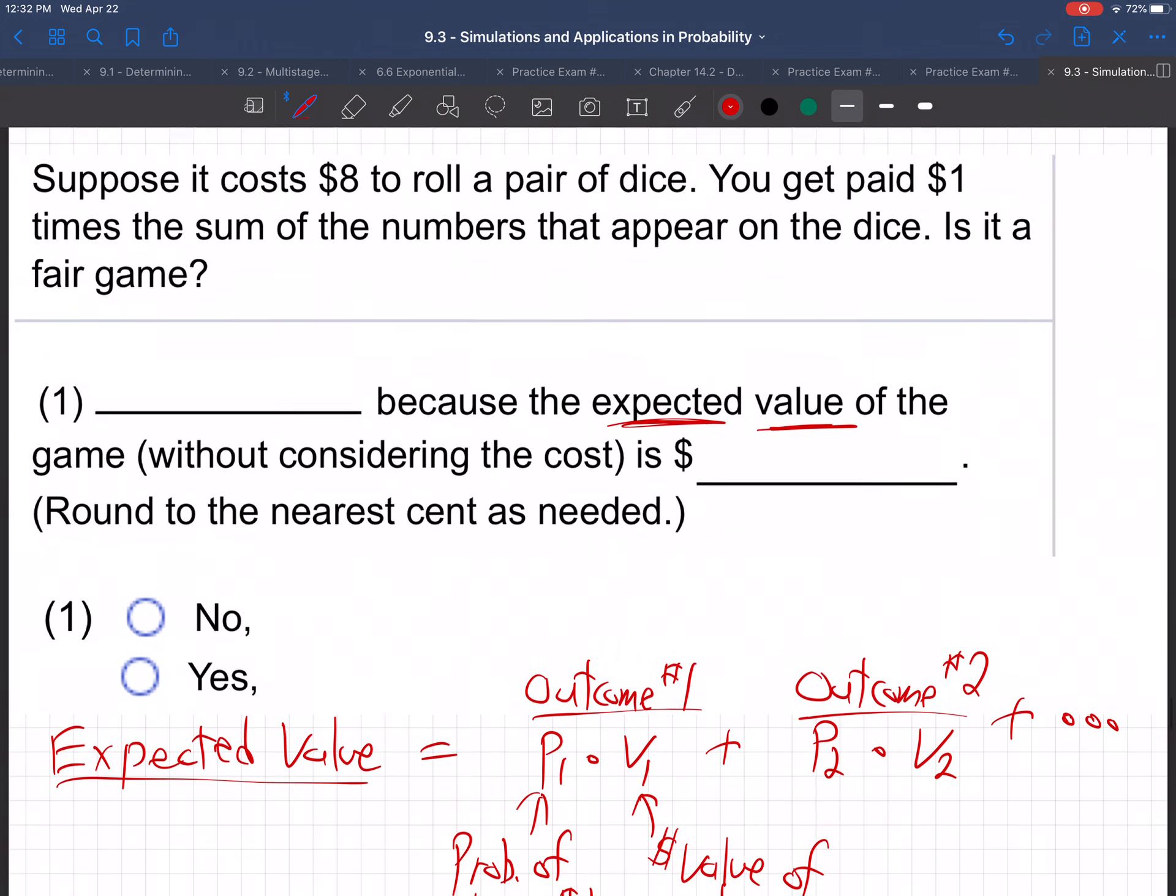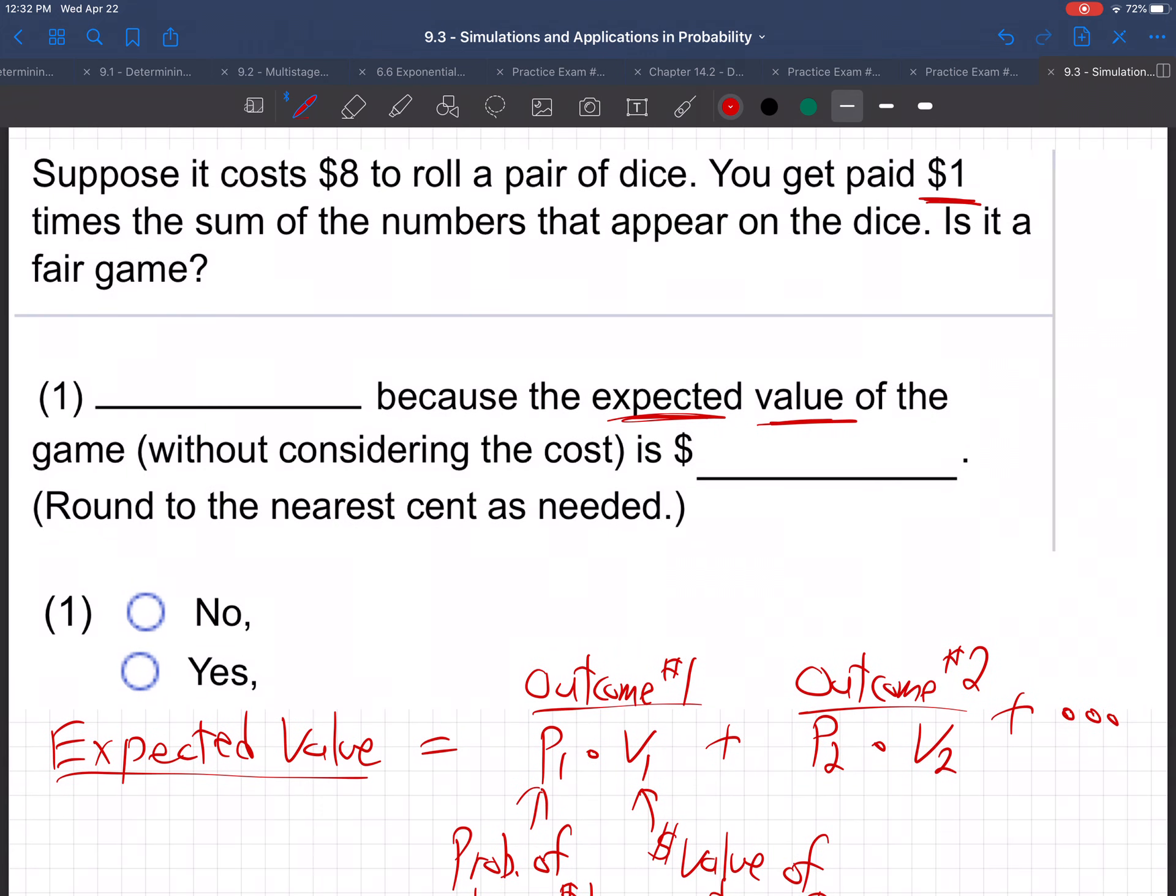So do you get the idea of what they're talking about? You're going to get paid $1 times the sum of the numbers that appear on the dice. You're going to roll a pair of dice. So you're going to roll two dice, and you're going to get $1 times the sum of the numbers.